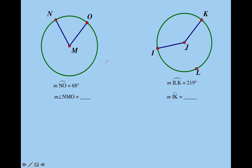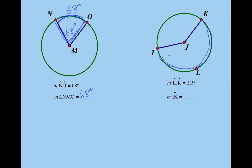See if you can figure this one out. We give you arc NO is 68 degrees. So what's angle NMO? Think of it like a piece of pizza — if the arc is 68 degrees, the central angle has to be 68 degrees. Now for arc ILK: that arc out there is 219 degrees. So the minor arc IK would be 360 minus 219, which is 141 degrees.